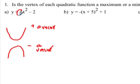So here, a is positive 4, so this one is going to open upwards, and that means that there's going to be a minimum.